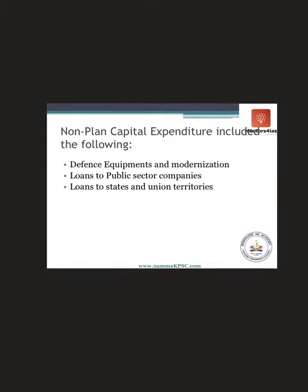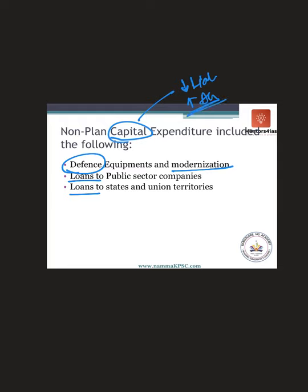Non-planned capital expenditure covered items that either reduced liability or increased assets — for example, government spending on defense equipment and modernization such as buying aircraft. Also, loans given to states, union territories, or public sector companies created an asset for the government because it would earn interest from them, so that was also capital expenditure.